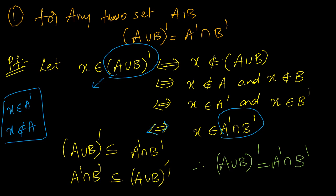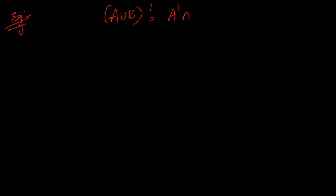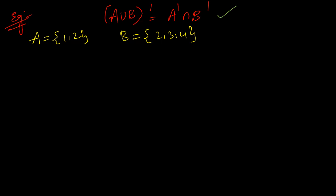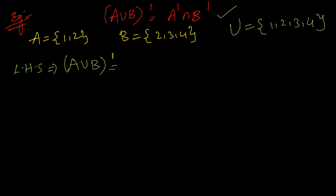Now let us see an example to verify the first De Morgan's law. We need to prove (A union B) complement = A complement intersection B complement. Let A = {1, 2}, B = {2, 3, 4}, and universal set U = {1, 2, 3, 4}. For the left-hand side: (A union B) complement = U minus (A union B).